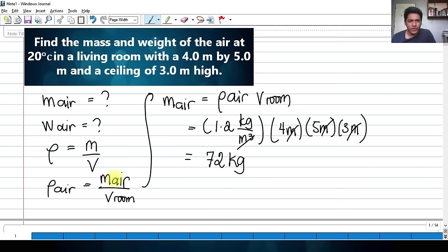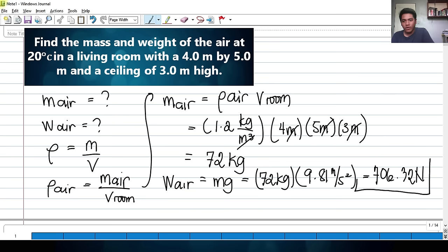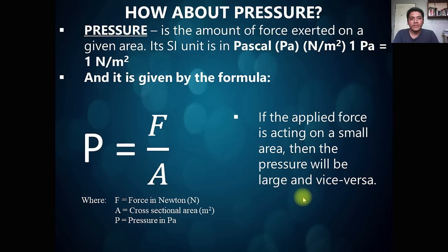For the weight of the air, we know that weight equals mass times acceleration due to gravity: 72 kg × 9.81 m/s² = 706.32 newtons. That is our answer for the weight and the mass of the air.